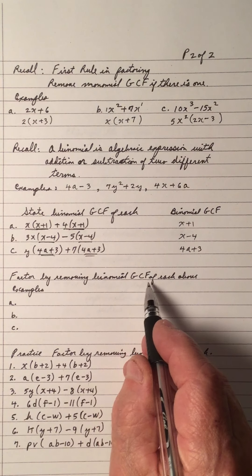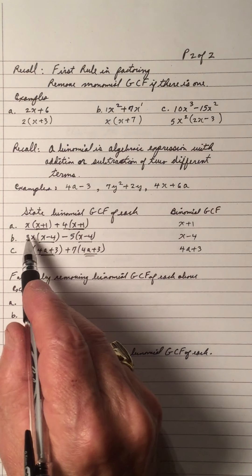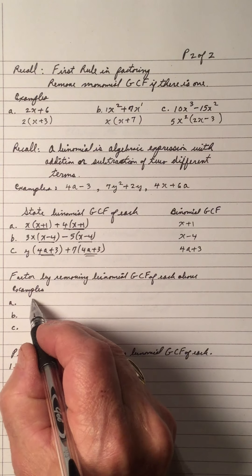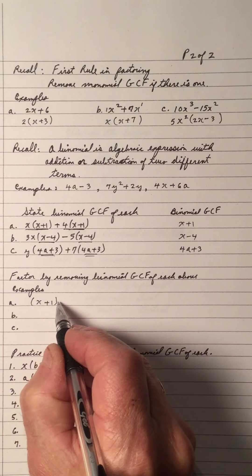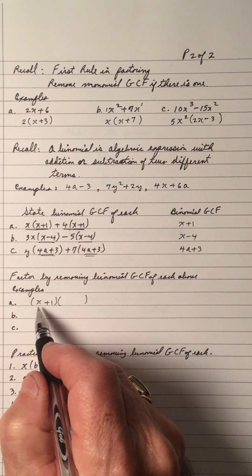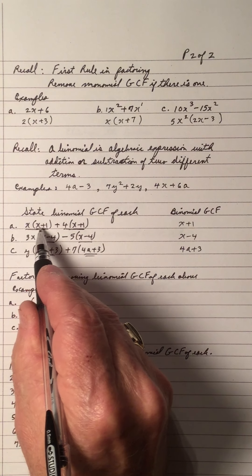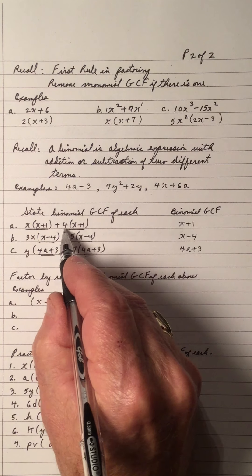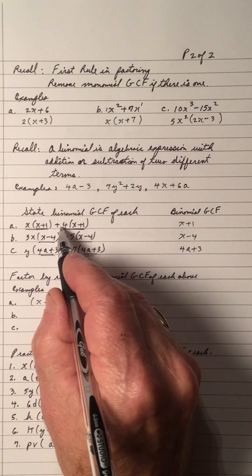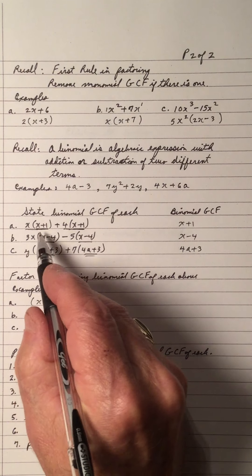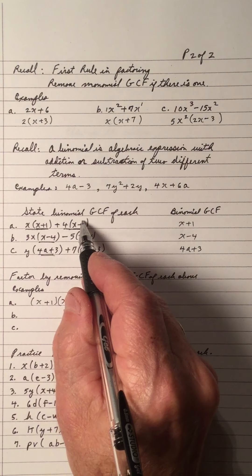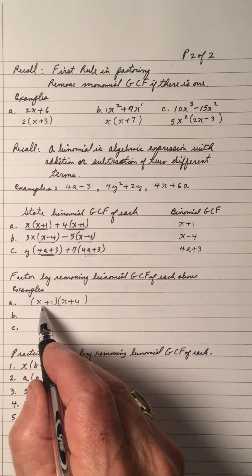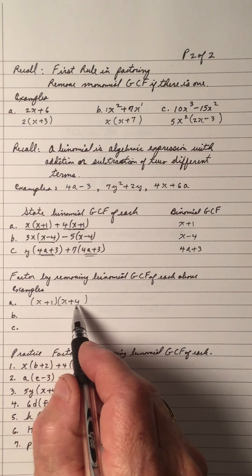Now factor by removing the binomial GCF. In part a, the binomial GCF is x plus 1 — it's common, so we place x plus 1 in one bracket. Dividing this expression by x plus 1 gives x, and dividing the other expression by x plus 1 gives plus 4. So x plus 1 is being multiplied by x, and x plus 1 multiplied by 4.